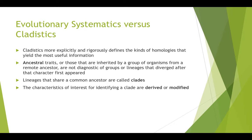When we talk about some of the differences between these two approaches, cladistics more explicitly and rigorously defines the kinds of homologies that yield the most useful results. Ancestral traits — those shared or inherited by a group of organisms from a remote ancestor — are nowhere near as useful as derived traits. Lineages that share a common ancestor are called clades, and the characteristics of interest for identifying these clades are derived or modified characteristics.